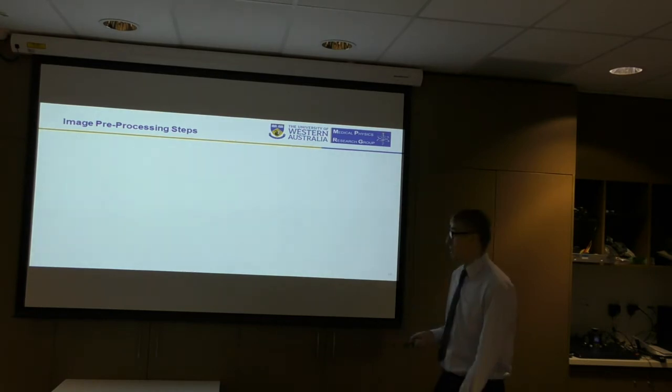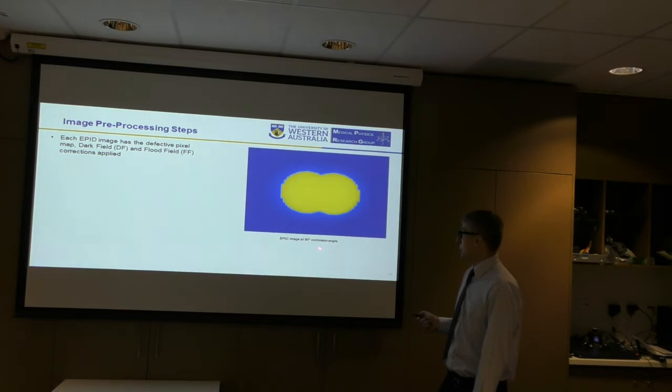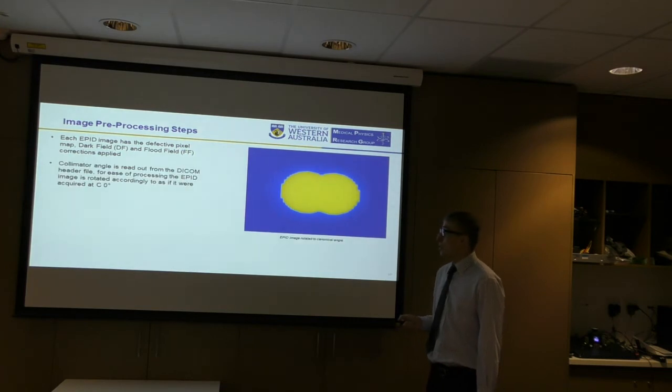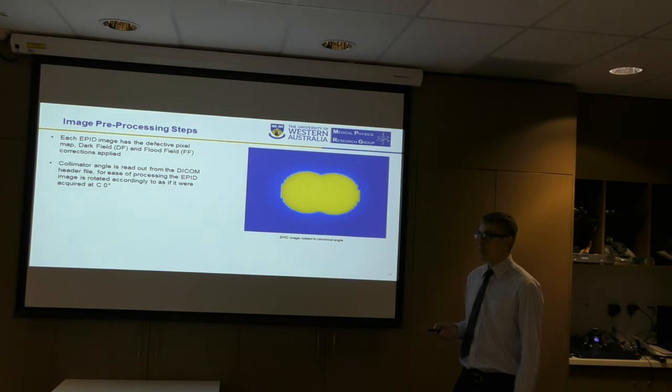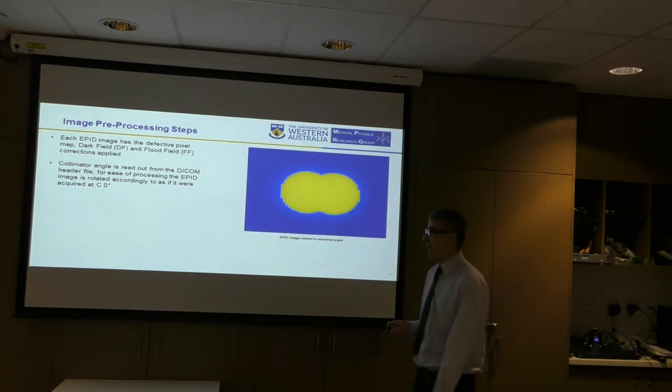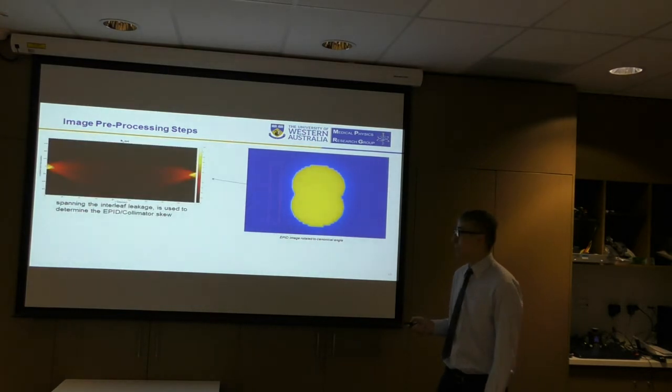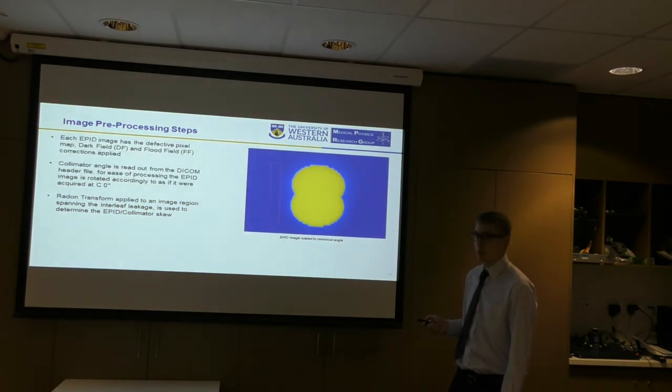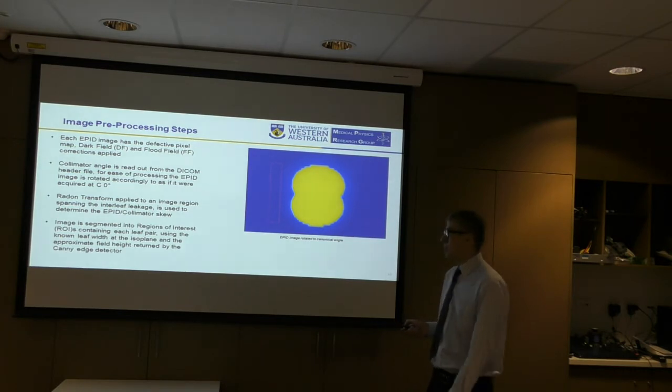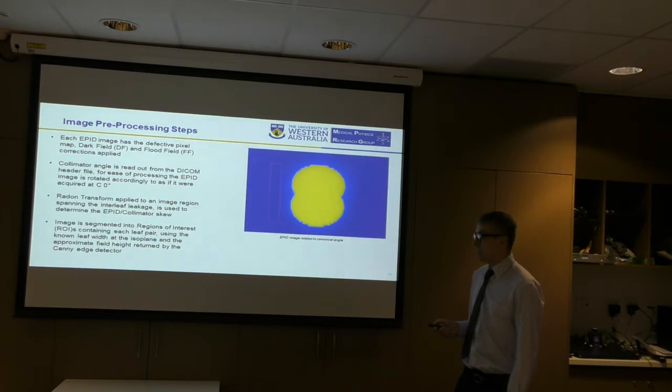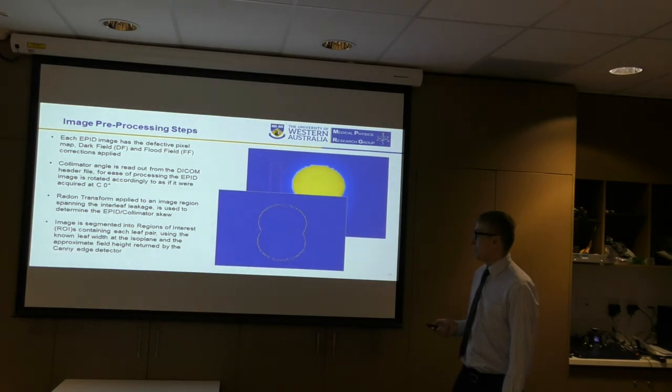Once the EPID image has been acquired, the image pre-processing steps are as follows. The EPID image acquired at some arbitrary collimator angle automatically has the defective pixel map, the dark field and flood field corrections applied by the manufacturer acquisition software. The collimator angle is read out from the DICOM header file, and for ease of image processing, so to make it easier for the algorithms to process, it's then rotated to as if it was taken at a collimator angle of zero. Radon transform applied to an image region spanning the interleaf leakage is used to determine the EPID collimator skew and subsequently corrected.